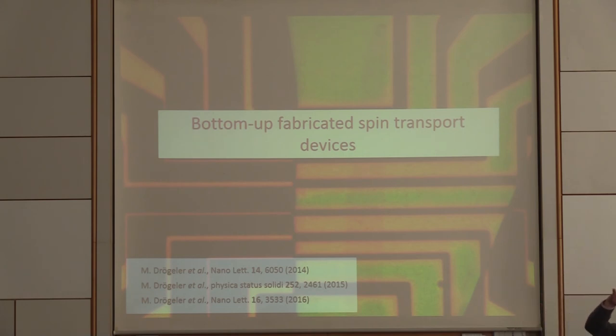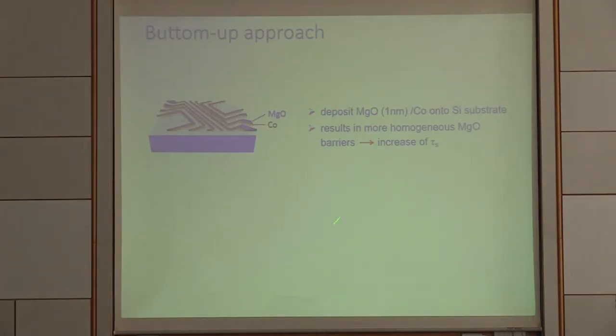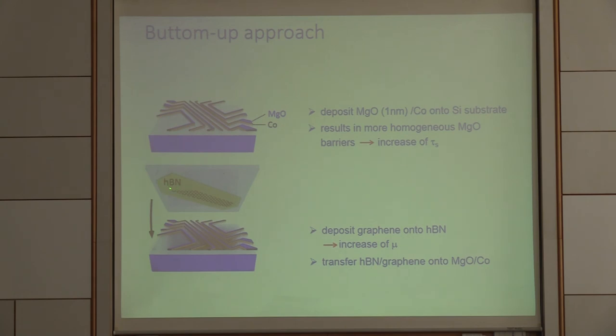That was then leading to the approach of making everything upside down. We call this the bottom up fabrication where we make now the ferromagnetic contacts first, then the tunneling barrier and then we place the graphene on top. This way we can do much more heavy processing on making the contacts. And we do have very little processing steps afterwards when we once place the graphene.